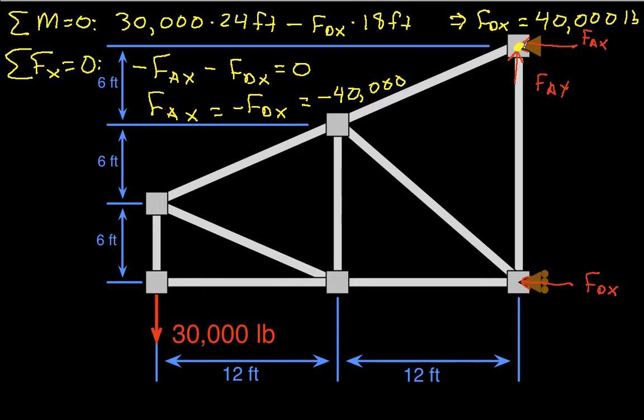So FAX is negative 40,000 pounds. So basically, this joint is pulling this direction, while this joint is indeed pushing this direction. Okay, and summing all the Y's, we have FAY minus 30,000 pounds is equal to 0. And this then tells us that FAY is equal to 30,000 pounds.